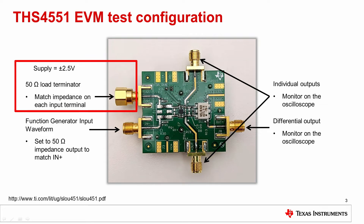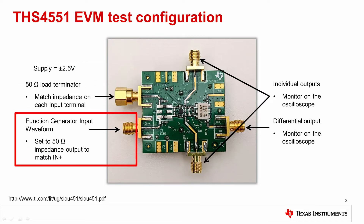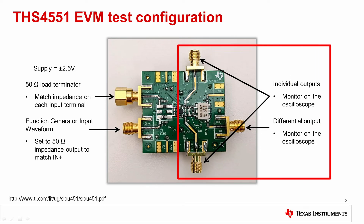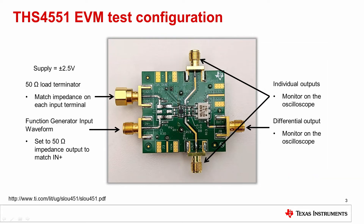We will be using this part with a single-ended input stage, so the positive input pin will need to be terminated with a 50-ohm load. Because the input impedances will need to match, the function generator will also need to be terminated to a 50-ohm load. The board has been configured so that we can monitor both the individual outputs as well as the differential output. For more information on the configuration of the EVM, please refer to the EVM user's guide on TI.com.